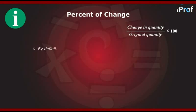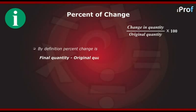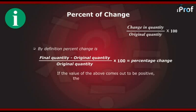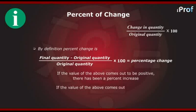By definition, percent change is given as final quantity minus original quantity, whole divided by original quantity, into 100. If the value comes out to be positive, there has been a percentage increase. If the value comes out to be negative, there has been a percent decrease.